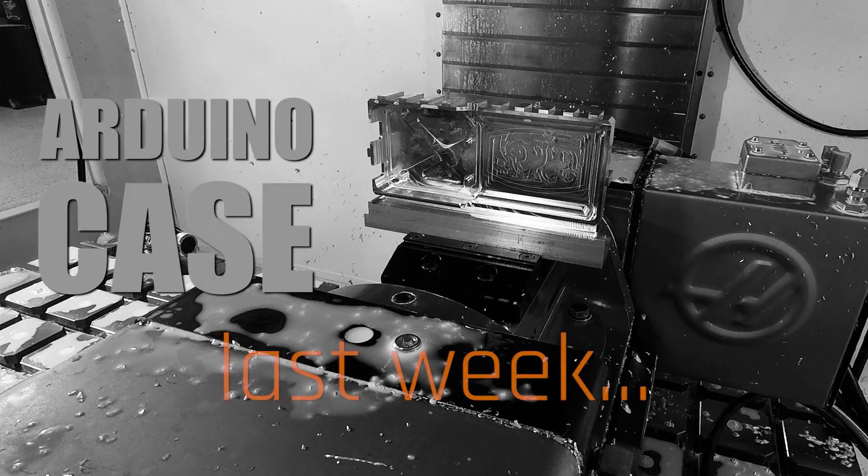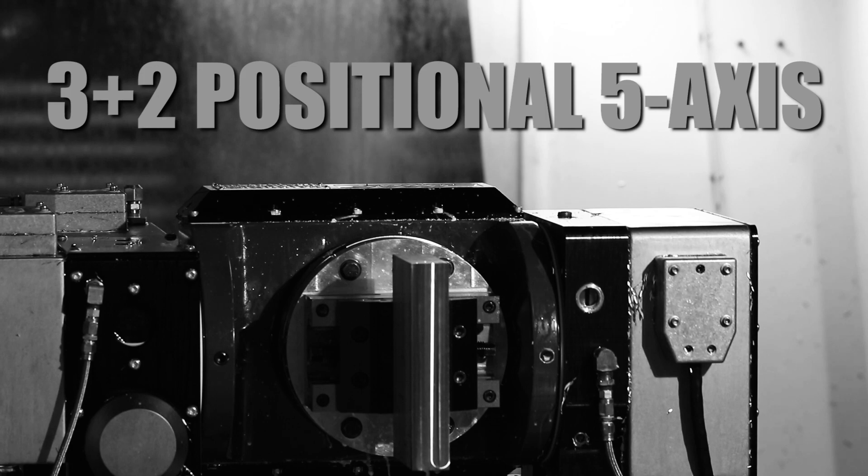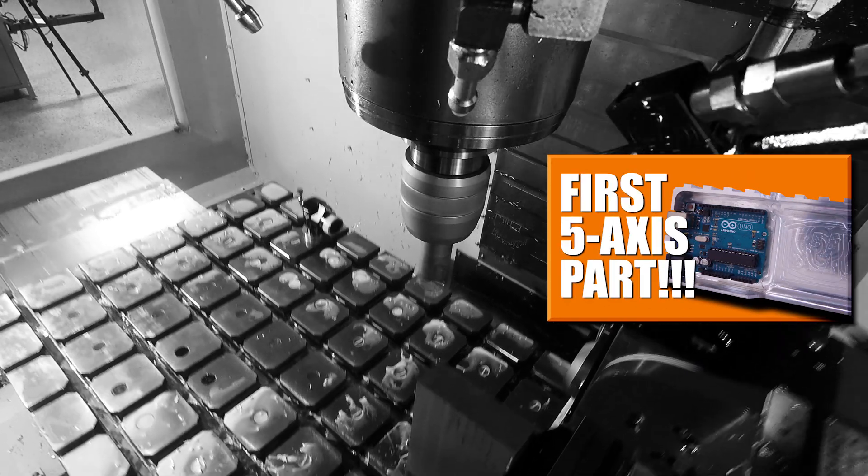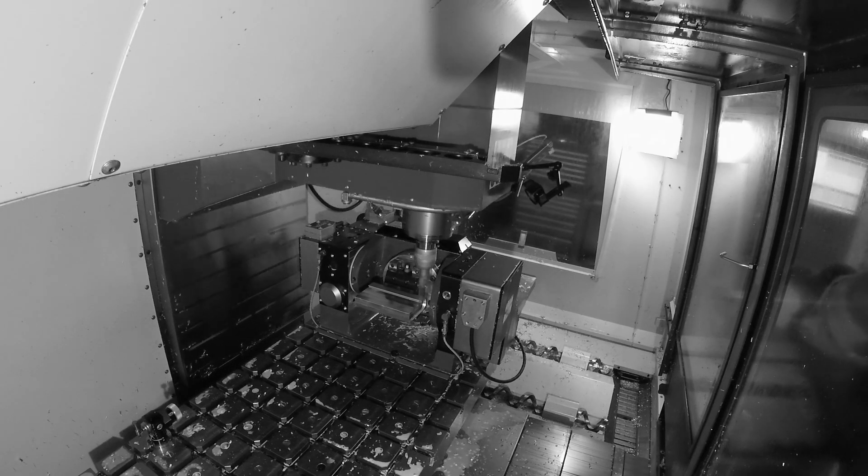So last week we machined an Arduino case. We used positional 5-axis works of 3 plus 2. Relatively simple, still awesome, very functional, and probably how a lot of 5-axis machines are actually used, just to reorient the part and minimize setups.